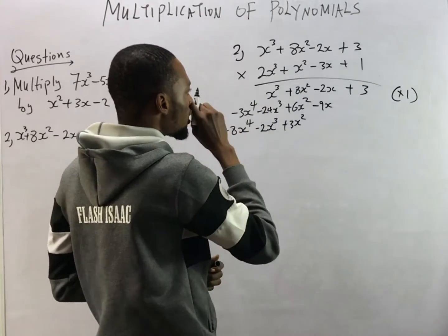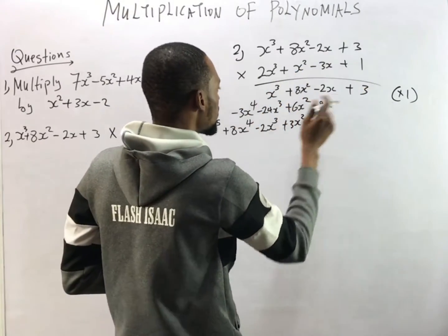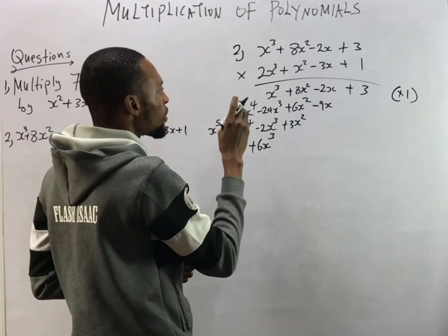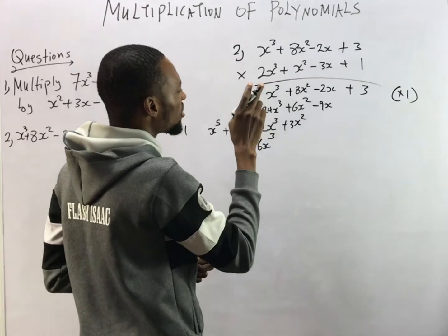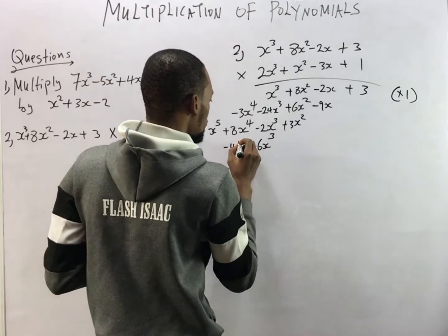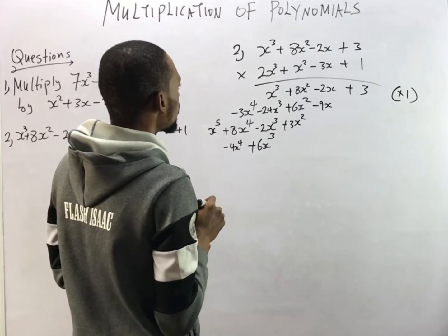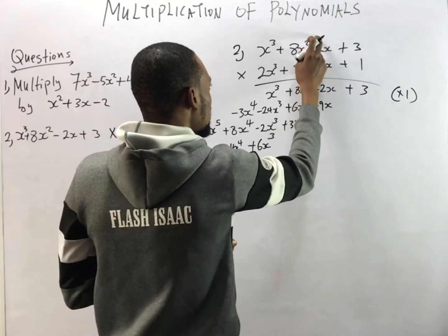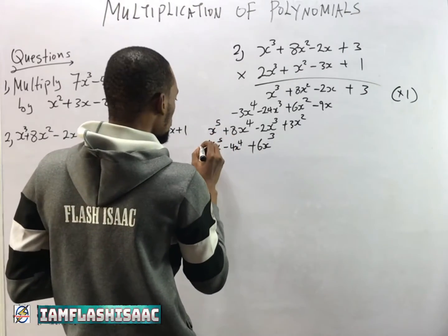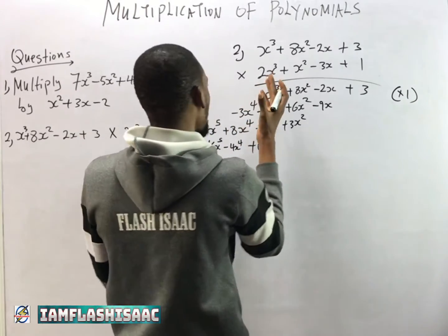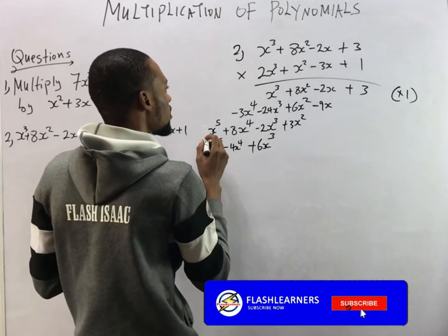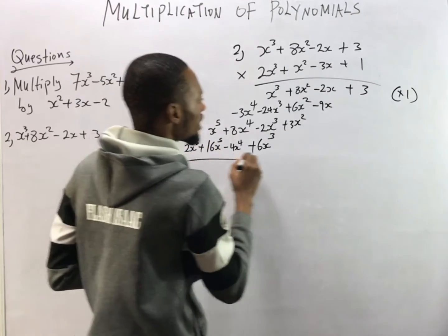Now we multiply by 2s³. 2s³ times 3 gives 6s³. 2s³ times minus 2s gives minus 4s⁴. 2s³ times 8s² gives 16s⁵. Then 2s³ times s³ gives 2s⁶. So that completes this multiplication step.